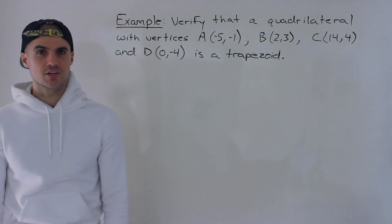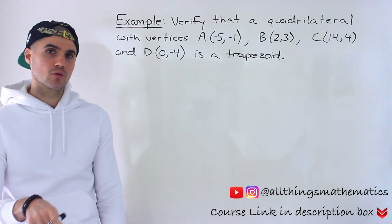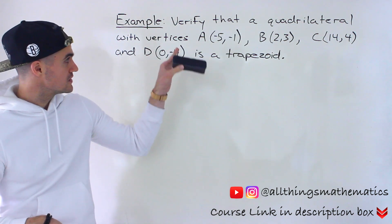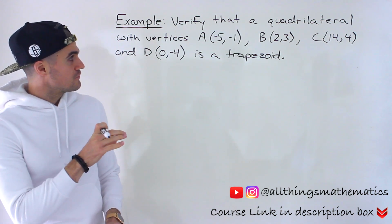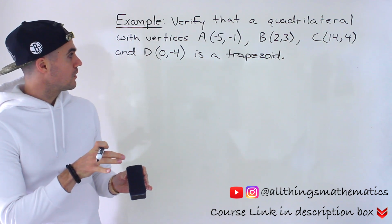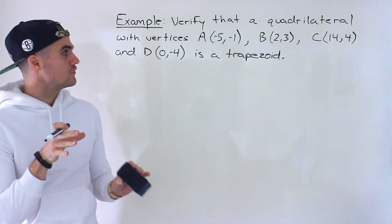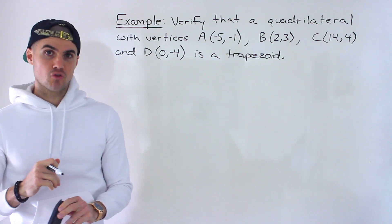What's up everyone? Welcome back. Patrick here. Moving on to another question dealing with quadrilaterals. So we are given this quadrilateral here with vertices A(-5, -1), B(2, 3), C(14, 4), and then D(0, -4), and we have to verify that it's a trapezoid.